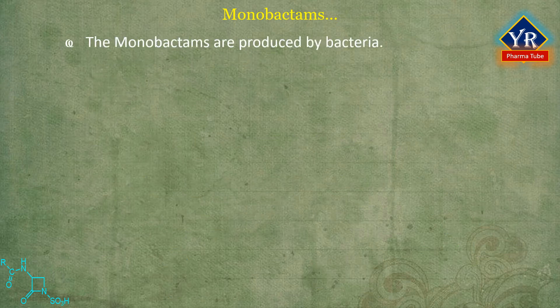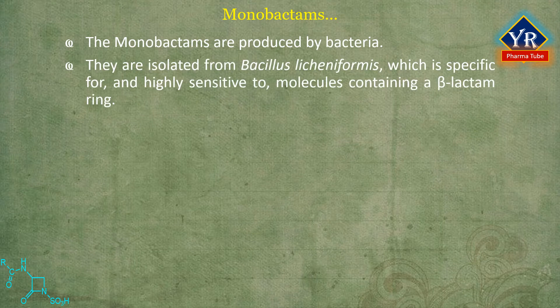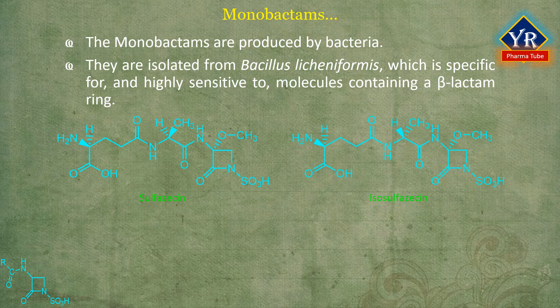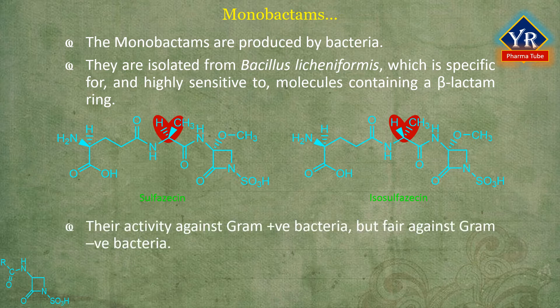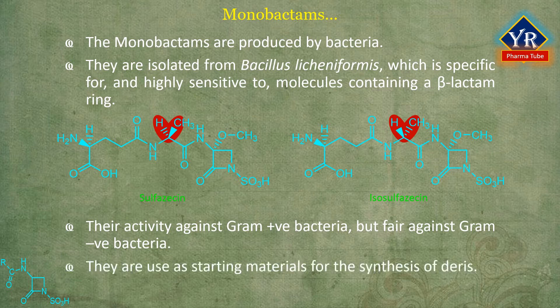The monobactams are produced by bacteria. They have been isolated from bacterial strains of Bacillus licheniformis, which is specific for and highly sensitive to molecules containing a beta-lactam ring. The first monobactams isolated are sulfazacin and isosulfazacin, characterized by a sulfonic group as a substituent at the lactam nitrogen and a dipeptide in the position alpha to the carbonyl. Their activity is quite poor against gram-positive bacteria but fair against gram-negative ones, and they have been used as starting materials for the synthesis of derivatives.